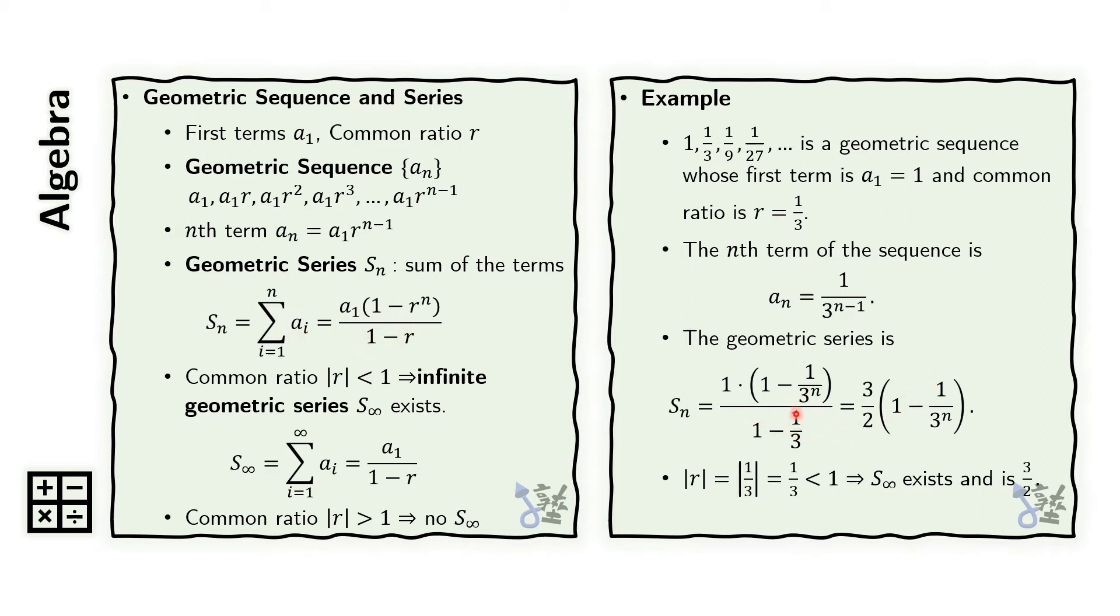Now, the common ratio is 1 third, and the absolute value of 1 third is less than 1. Therefore, the infinite geometric series exists, and we can compute it by substituting the values here.